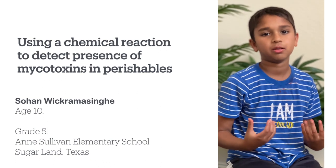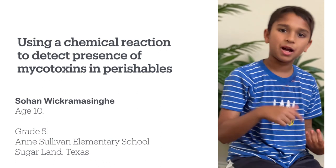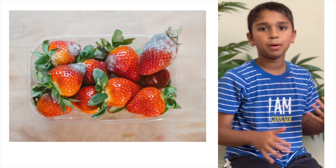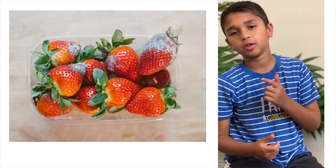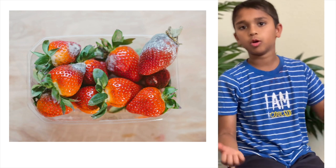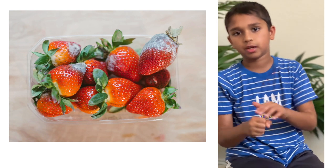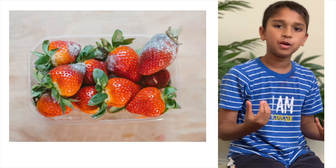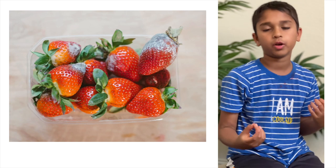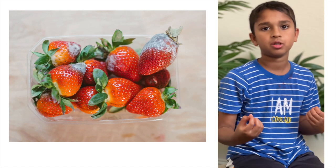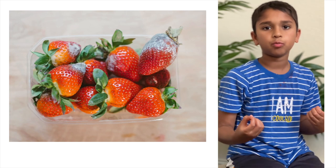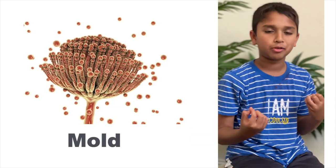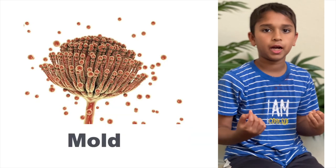Now let me explain how this works. Imagine you go to the grocery store, buy some fruit, only to find out the next day you have to throw it in the garbage can. Why? It's because of some white fuzzy stuff that's growing on your fruit. That white fuzzy stuff is mold. Mold is microscopic fungi.